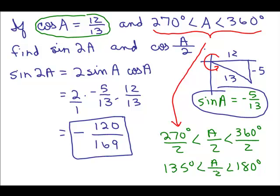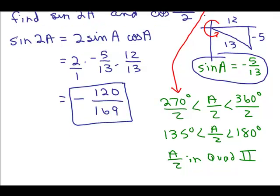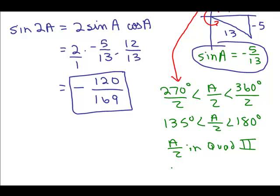And where is that? A over 2 is in quadrant 2. And in quadrant 2, is the cosine positive or negative in quadrant 2? It's negative. So you have to keep that in mind because now we're ready to figure out the cosine of A over 2.